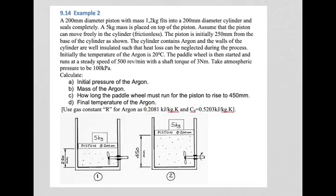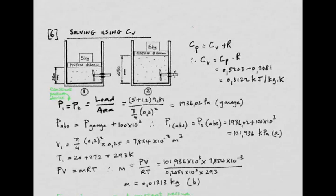Let's find the pressure in the argon. Pressure is load over area. The load is the weight of the piston and mass on top, (1.2 kg) × 9.81, divided by the piston area. We find 1936.02 pascals gauge pressure. Absolute pressure is gauge plus atmospheric: 101.936 kPa.